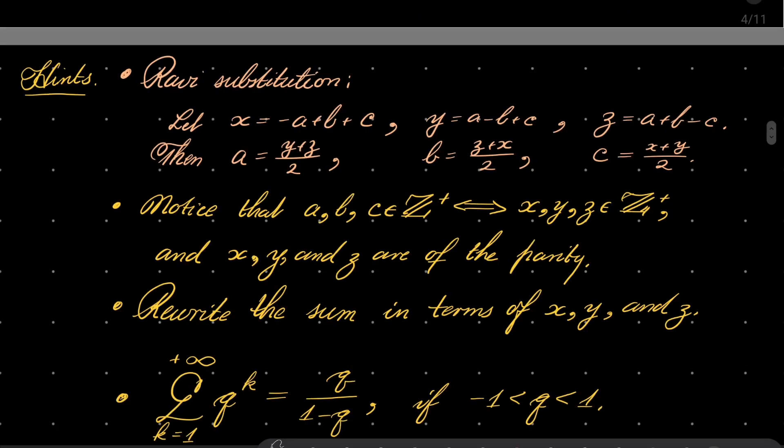We'll make use of the following famous Ravi substitution. If you don't know it, it's a very useful method usually reserved for proving inequalities, but it will be just perfect for us. So let x be -a + b + c, y be a - b + c, z be a + b - c. Then you can find a to be this, b to be this, c to be this.